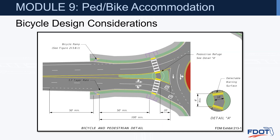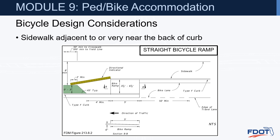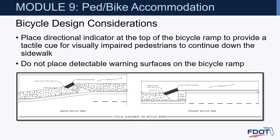This detail is from FDM exhibit 213-1 and shows bicycle and pedestrian details. When a utility strip of at least 3 feet is present, the FDM requires the use of the angled bicycle ramp as shown in this detail, figure 213.8.1, with all the dimensioning and taper rates. When the sidewalk is adjacent to or very near the back of curb, use the straight bicycle ramp design. Place a directional indicator at the top of the bicycle ramp to provide a tactile cue for visually impaired pedestrians. Do not place detectable warning surfaces on the bicycle ramp.